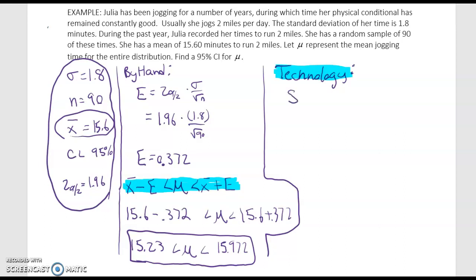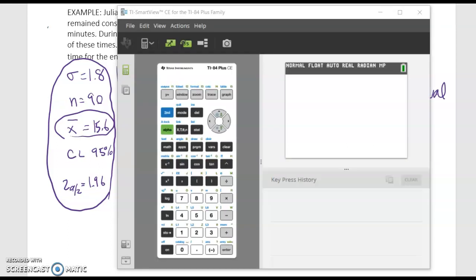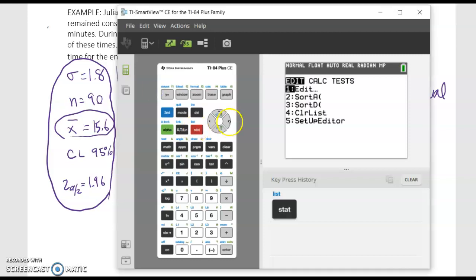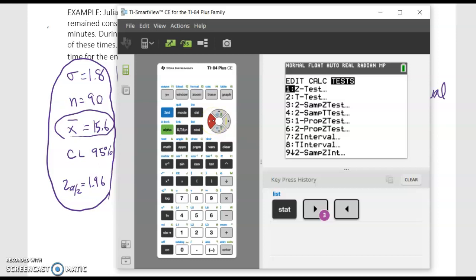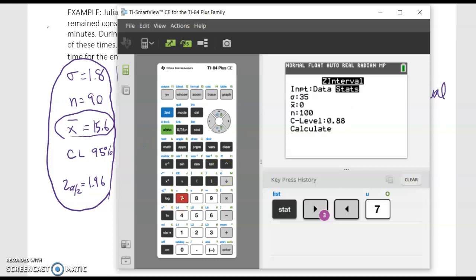Remember before we do it we're going to be going stat tests over to tests and then we're going to select z interval and follow the prompts. So in my calculator I press stat I press over until I get to test and I'm going to scroll down until I get to z interval which is number seven so you can just select number seven. And we have an option for data or stats.